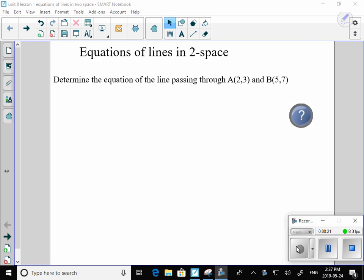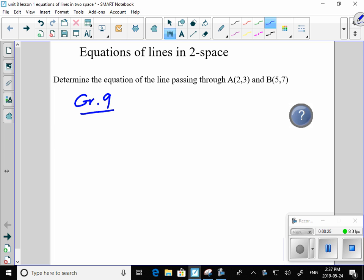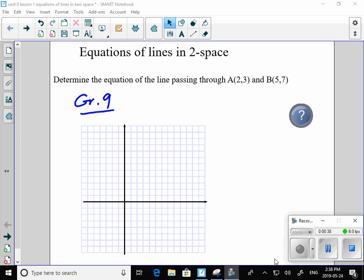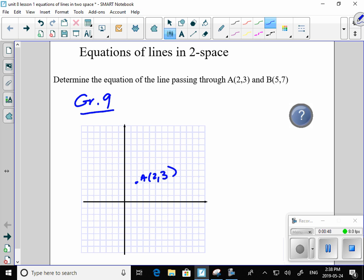When we were in grade 9, our thinking was we need to have a slope and we need to have a point in order to define our line. So we can graph this thing and we can determine the equation. So we can use the points A(2,3) and B at (5,7).